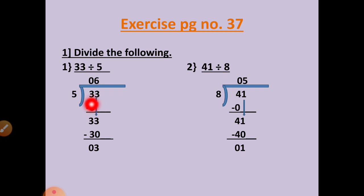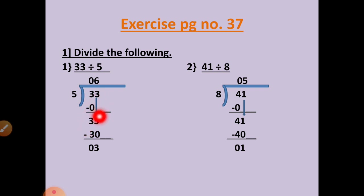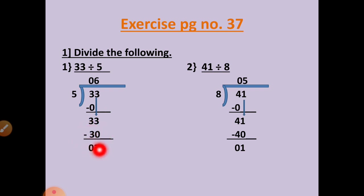Now, first we will take the first number. Here the first number is smaller than the divisor. In the table of 5, 3 will not come because it is smaller than 5. So we will take 0. 5 zeros are 0. 3 minus 0 equals 3. Now copy the next number, that is 3. Now this number is 33. In the table of 5, 33 will not come, but the smaller number is there. 5 sixes are 30. 3 minus 0 equals 3, 3 minus 3 equals 0. So in remainder, 3 will remain.